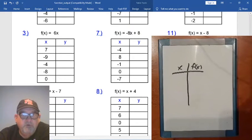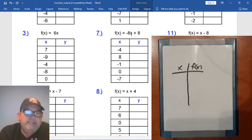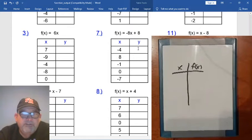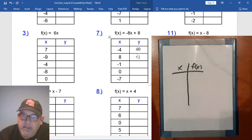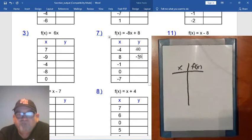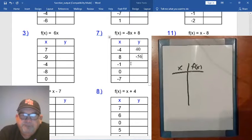So negative 4. Replace X with negative 4. So I end up with negative 8 times negative 4. So we've got to be careful here. So negative times a negative is going to be a positive. So negative 8 times negative 4 is positive 32, and then we add 8 more to that, and we get 40. Positive 8. Negative 8 times positive 8 is negative 64. And negative 64 plus 8 is going to be negative 56, right? Yes. I had to think there for a minute. Negative 1. Negative 8 times negative 1 is positive 8, and positive 8 plus positive 8 is 16. 0. Well, anything times 0 is 0, and 0 plus 8 is 8. Easy enough.